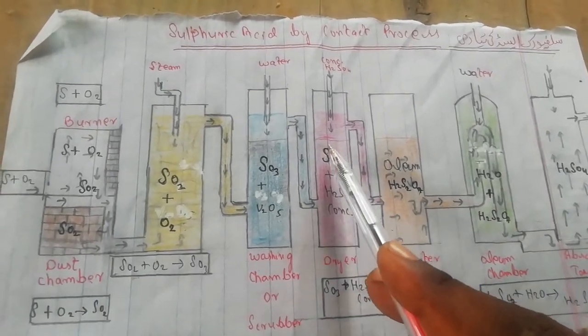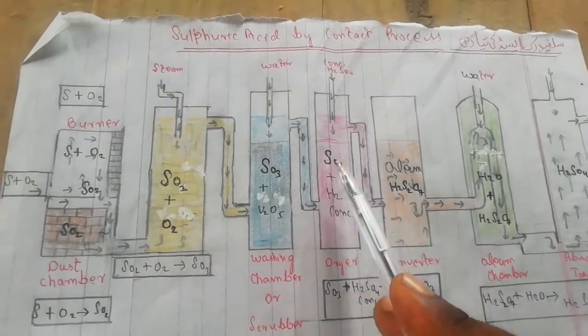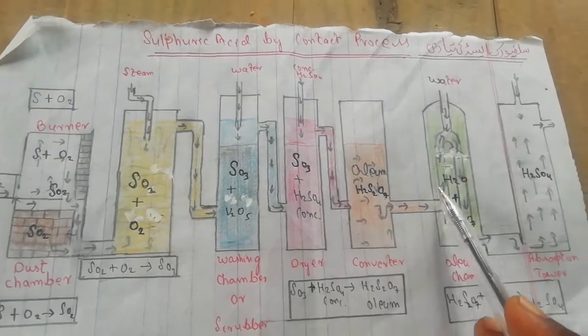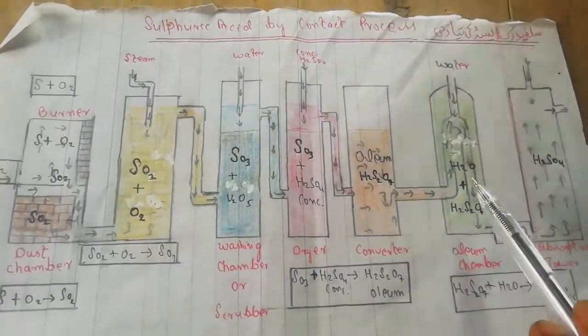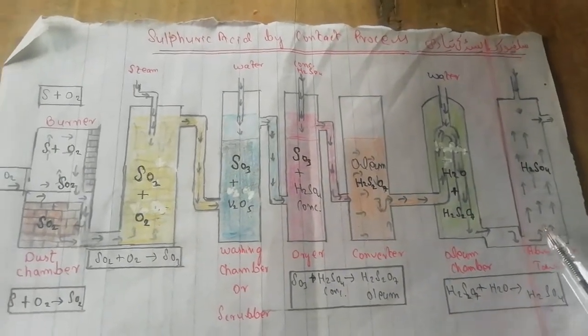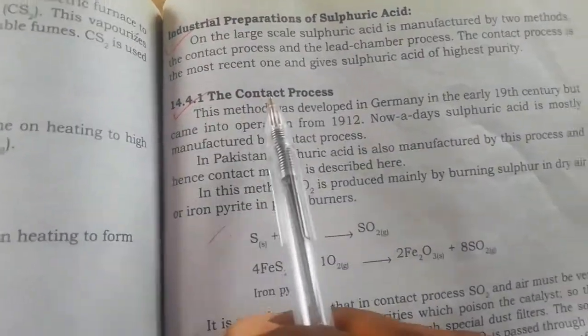In the contact process, SO3 reacts with concentrated sulfuric acid to form oleum, and then oleum reacts with water to produce sulfuric acid. This is the right way shown in the book. Here you can see the chemical equations. This is the contact process of sulfuric acid.